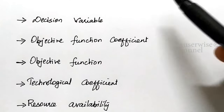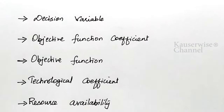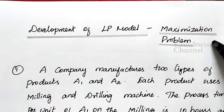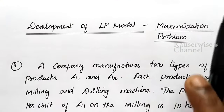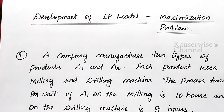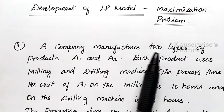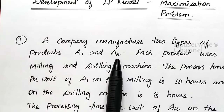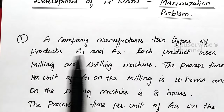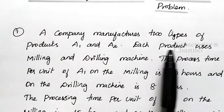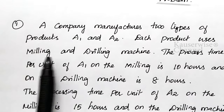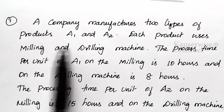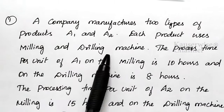Now we are going to see one problem for better understanding. This is a maximization problem for development of an LPP model. A company manufactures two types of products, A1 and A2. Each product uses a milling machine and a drilling machine.